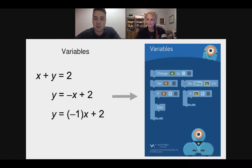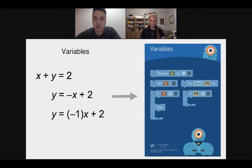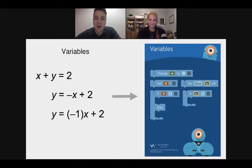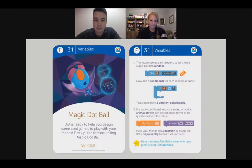One of the great things about variables is you can check the value of a variable. Earlier we talked about conditionals like 'if it's raining outside, put on your raincoat' — you can use a variable instead, meaning you could say 'if it's below 30 degrees, I'll wear my warmest coat,' checking a number like temperature and making a decision based on that.